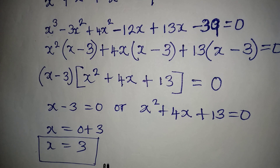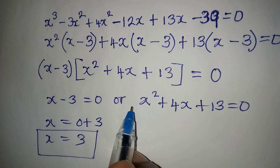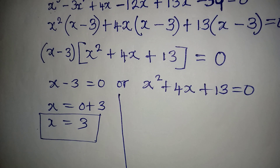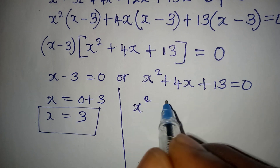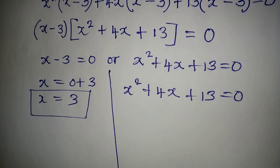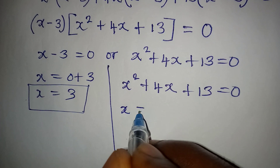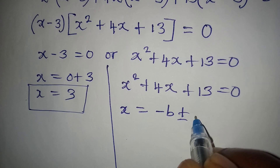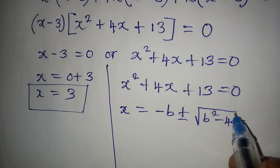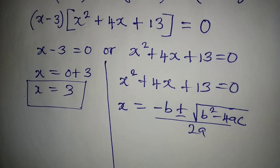But since the question says to solve completely, we go back to the quadratic x² + 4x + 13 = 0 and solve it using the quadratic formula: x = (-b ± √(b² - 4ac)) / 2a.